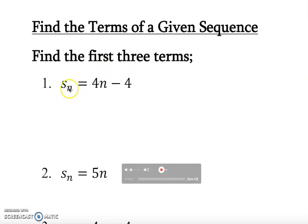So this is S sub n, sequence is given as 4n minus 4. So what is it? Can we find the first three terms? So how do we work it out?